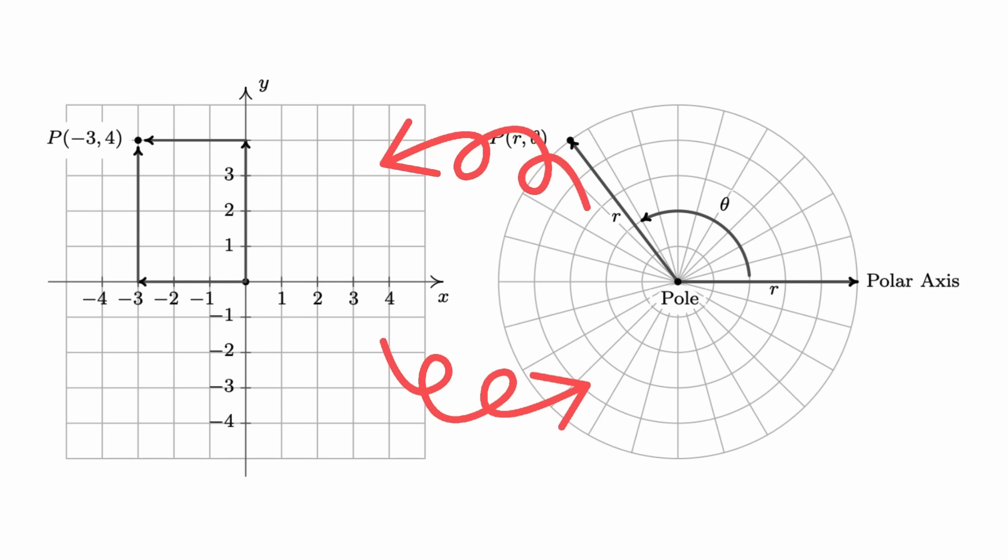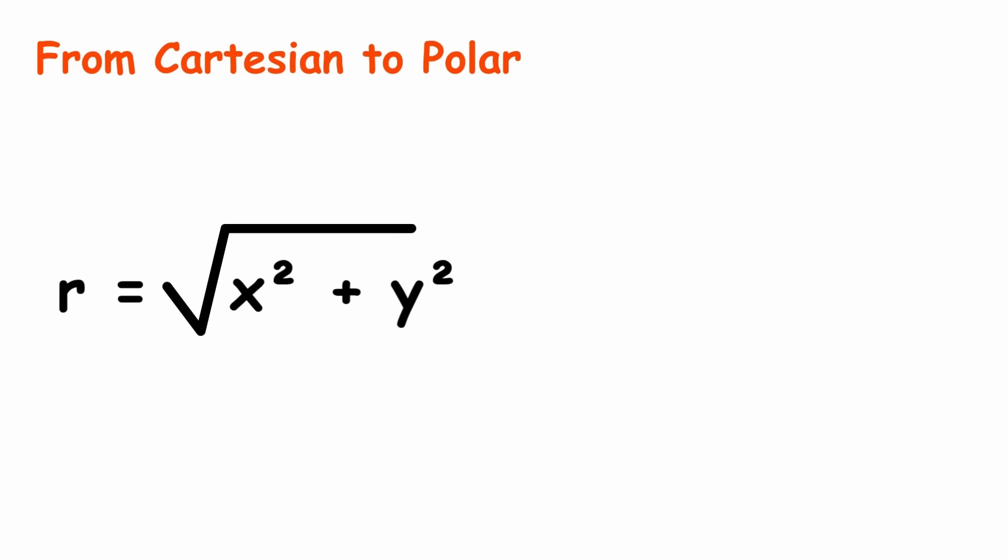To convert between polar and Cartesian coordinates, the following is used: from polar to Cartesian, X equals R cosine theta, Y equals R sine theta. From Cartesian to polar, R equals the square root of x squared plus y squared, theta equals arctangent of y over x.